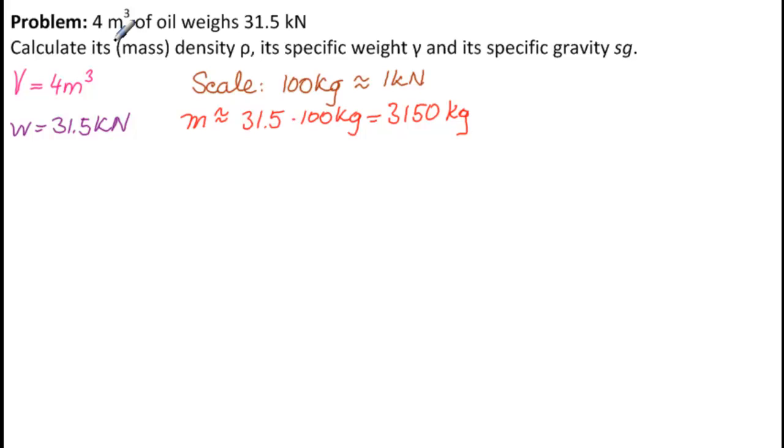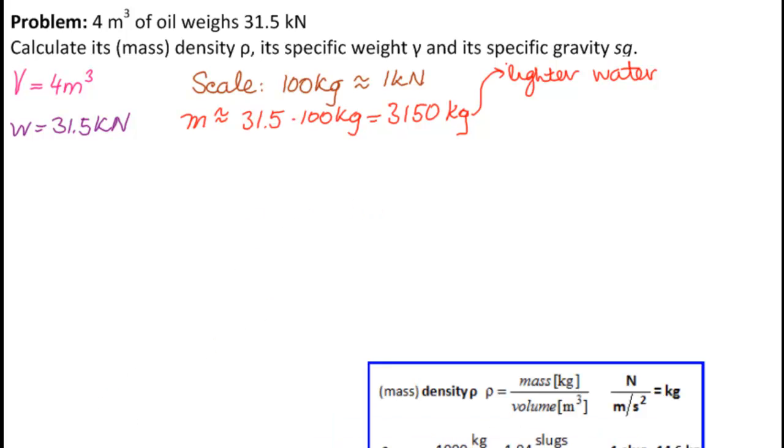So, for 4 meters cubed of oil, I have approximately 3,150 kilograms. That's lighter than water, because if it was water, it would be 4,000 kilograms. So, we're looking at something that's lighter than water. And we should keep that in mind. Okay, now, let's go to our formulas and do our calculations.